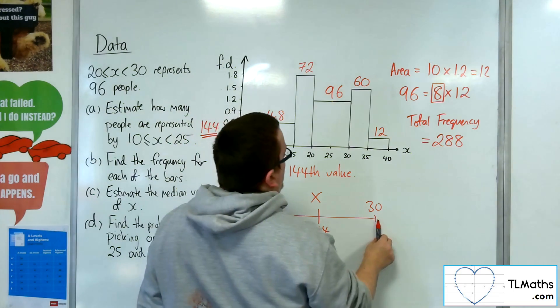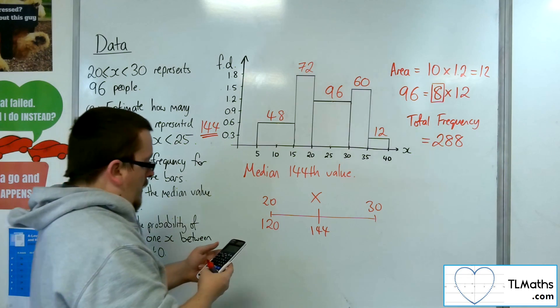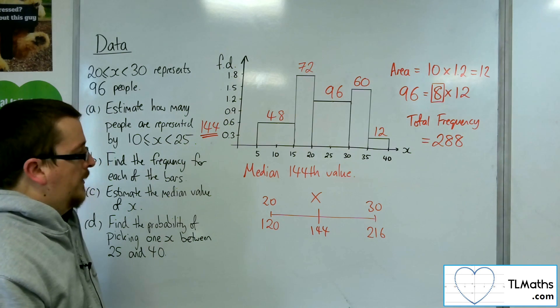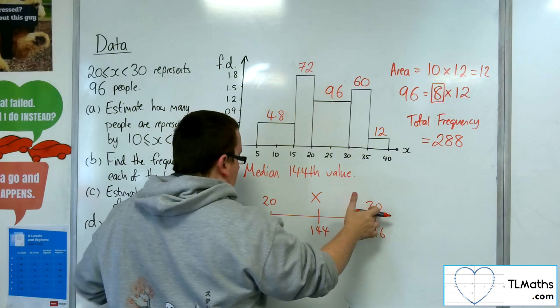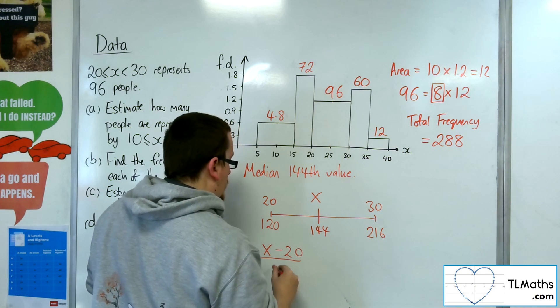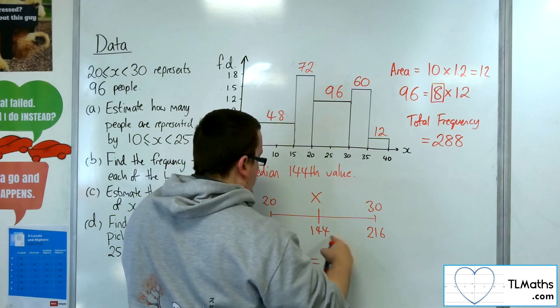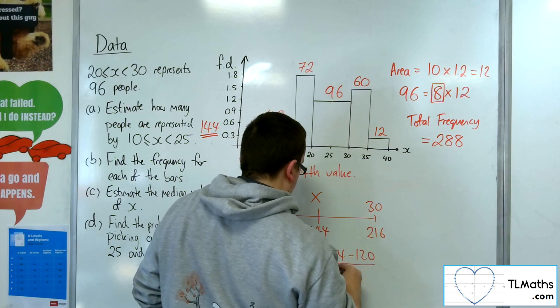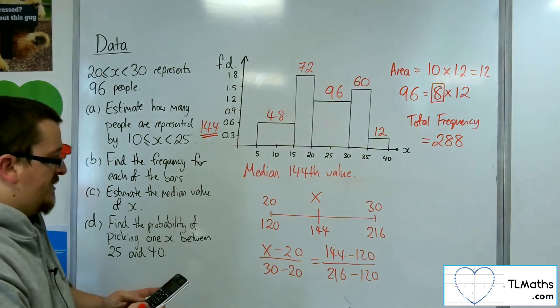And by the time I get to 30, just to make sure I'm getting my calculation right, I've gone through 216 data points. So the ratio of that difference to that difference must be the same as the ratio of that distance to that distance. This gives me an equation to solve.